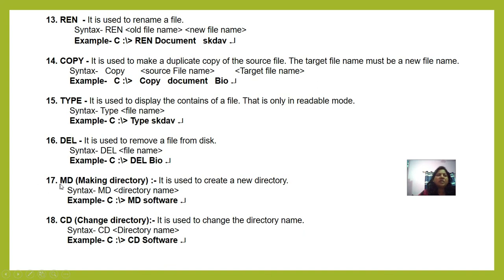The next command is MD — Make Directory. It is used to create a new directory. The syntax is: md, then the directory name. For example, 'md software'. A file is a collection of data, but a directory is where a list of files are stored — just like a Windows folder. You create a directory using the MD command.